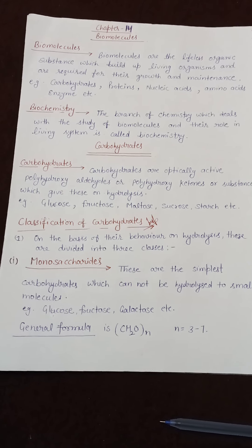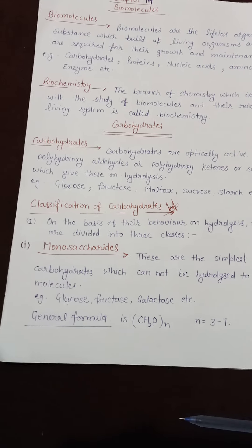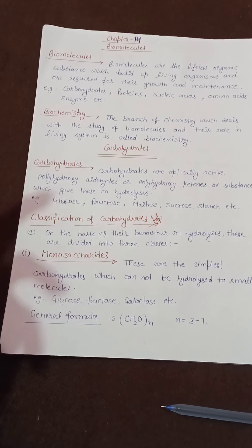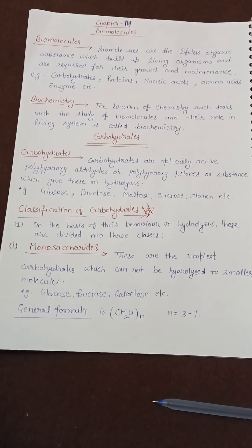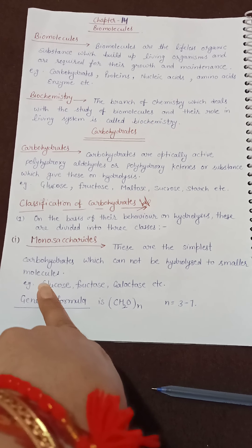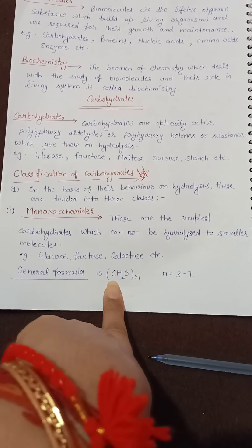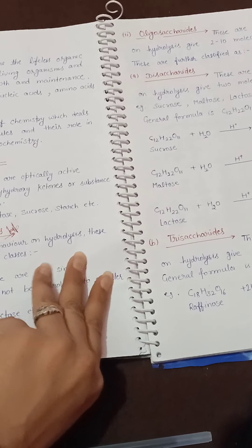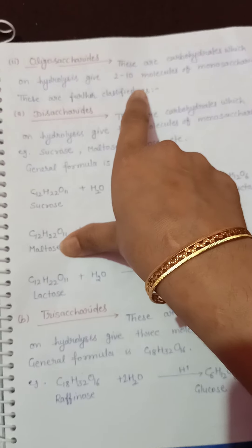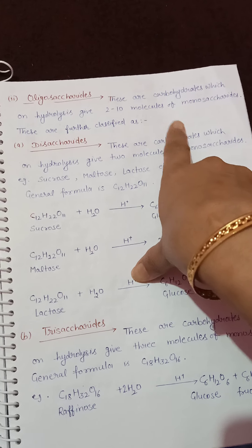Classification of carbohydrates on the basis of hydrolysis divides them into three main classes: monosaccharides, oligosaccharides, and polysaccharides. Monosaccharides (mono = one) are simple carbohydrates that cannot be hydrolyzed into simpler units — they contain 3 to 7 carbon atoms. Oligosaccharides (oligo = few) give 2 to 10 monosaccharide molecules on hydrolysis.